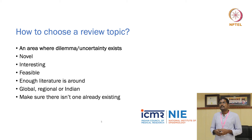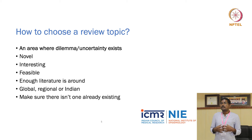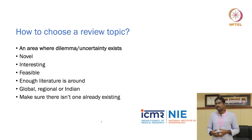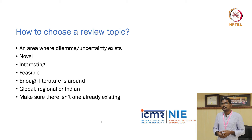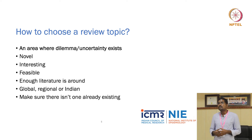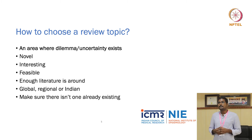The most important criterion for choosing a systematic review topic is to find an area where a dilemma or uncertainty exists. For example, in dentistry, you may not know whether treatment A is better than treatment B for a mandibular fracture. Another example: we don't know for certain whether e-cigarettes are associated with oral cancer. Areas of uncertainty like these are ripe for systematic reviews.